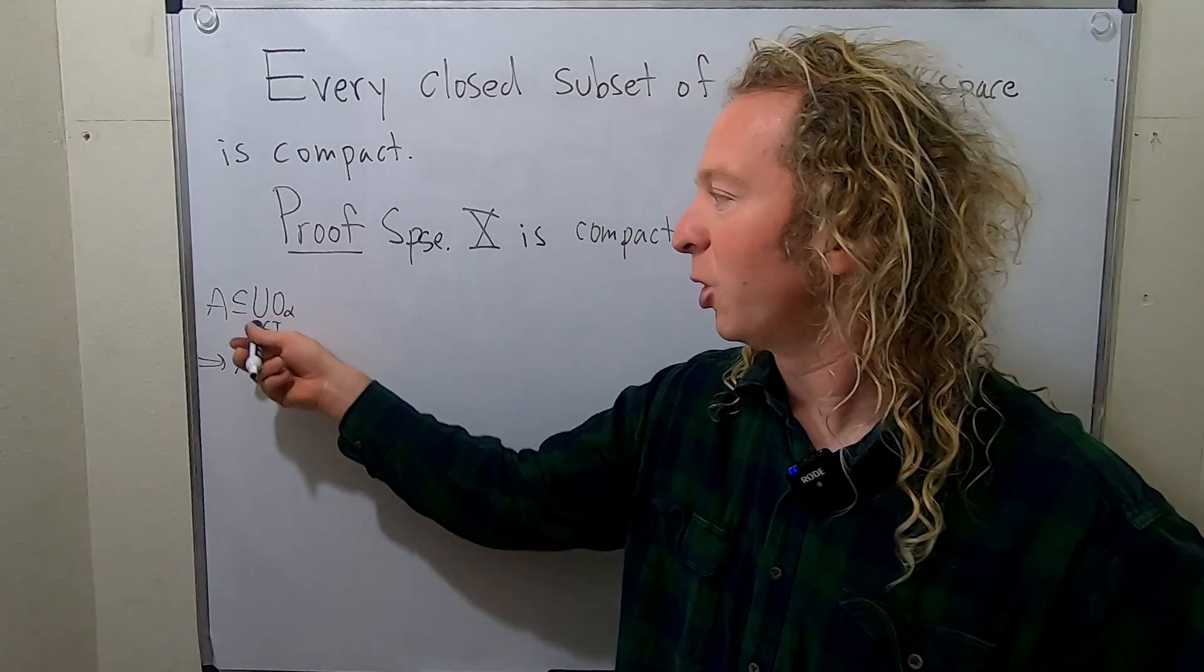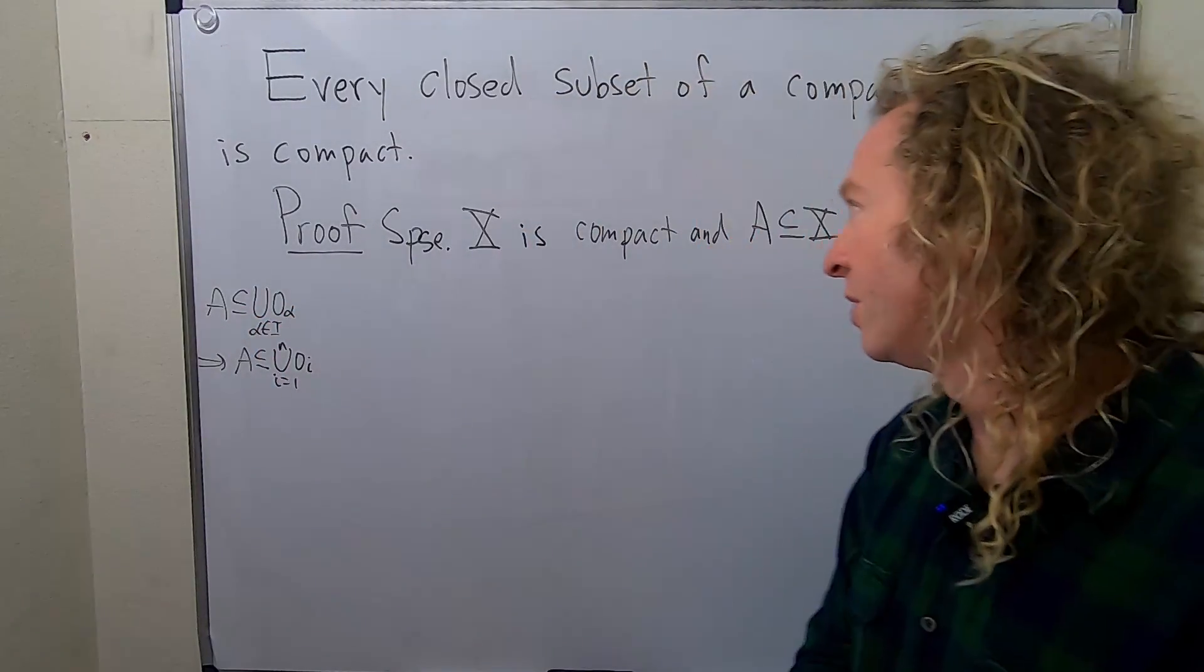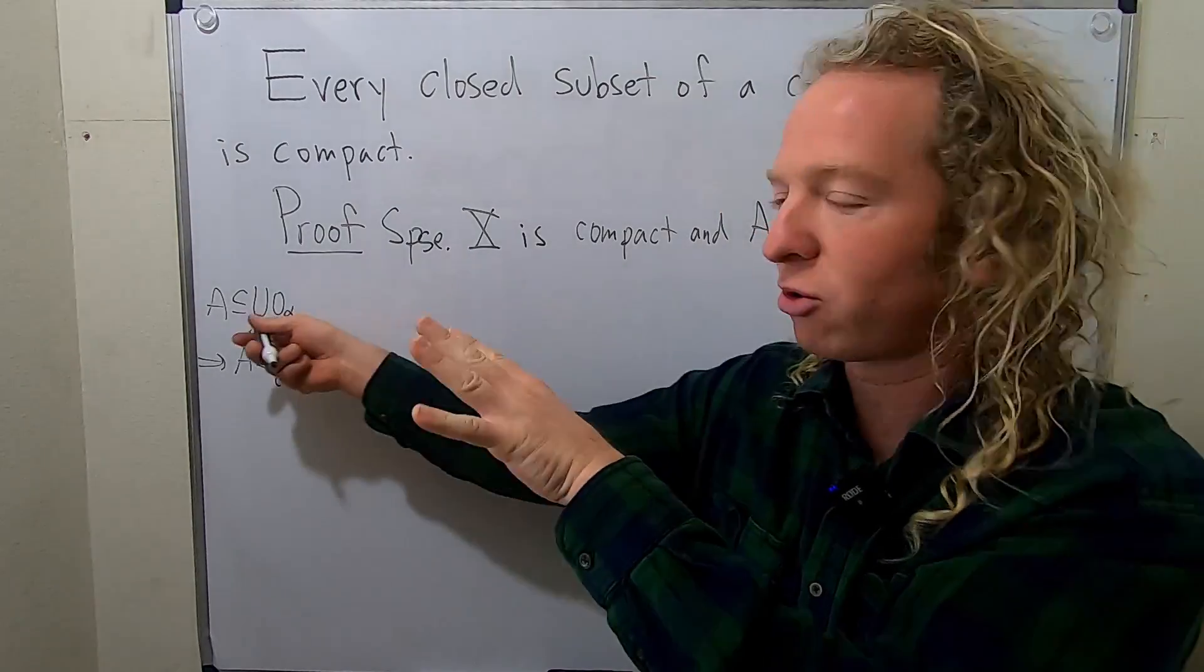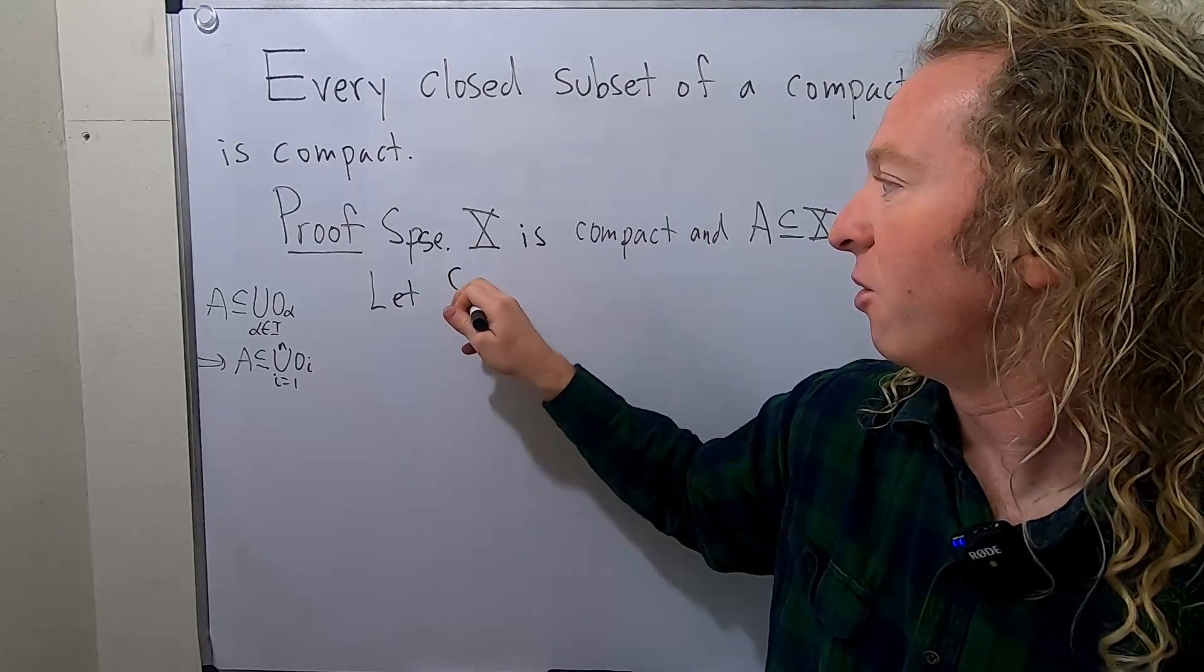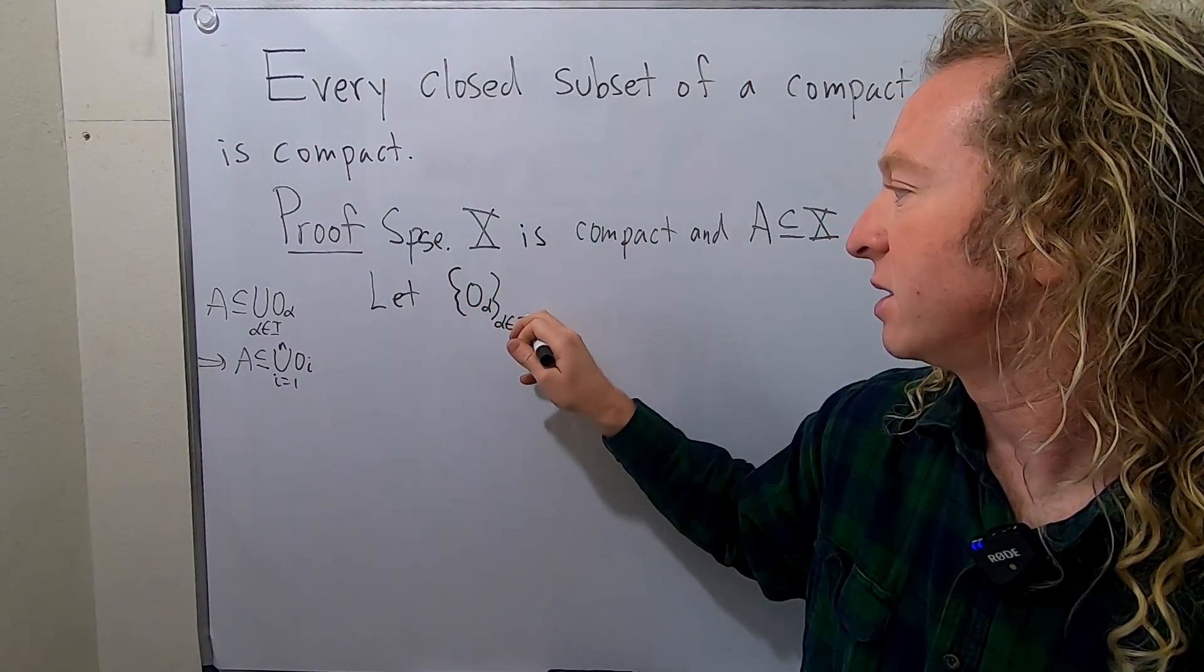So whenever you have any open covering, this is called an open covering, you can find a finite sub-cover. So to prove it's compact, we'll start by just taking an arbitrary open cover. So I'll say let, and I'll just do this, I'll call it O_α as α runs through some index set I.